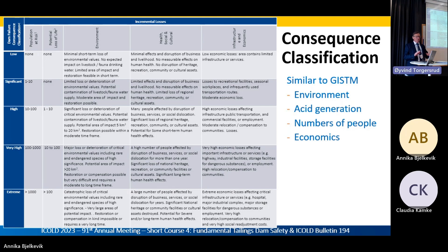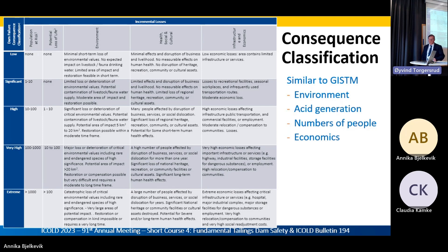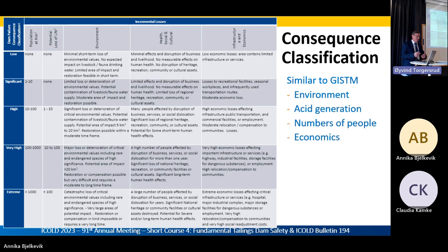We've cleaned that up. The population numbers you'll see in the GISTM — one thousand to two thousand or five thousand people — those numbers are gone. The dollar values, greater than one hundred million, greater than ten million, are also gone. The reason is that in some jurisdictions a five million dollar loss has a much more significant impact than in others, so we've removed those quantifiable thresholds which, while people often look for them, we found them to be a problem.